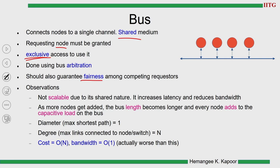What are the observations related to the properties of this network? Is it scalable? The more nodes you add, the more limitations arise: the number of transactions increases and the length of the wire — the bus width — must increase. If you increase the length of the wire, the capacitive load increases and that impacts latency. When latency increases, you get reduced bandwidth. Hence a bus network is not scalable. However, it is not useless — it is good for a small number of nodes.